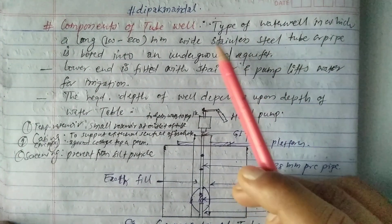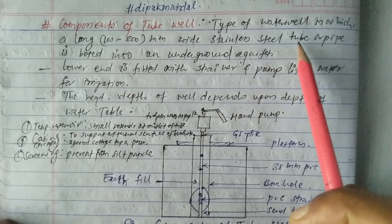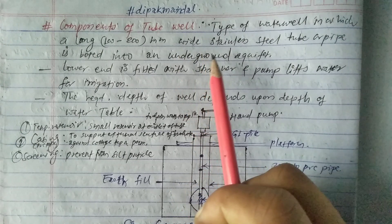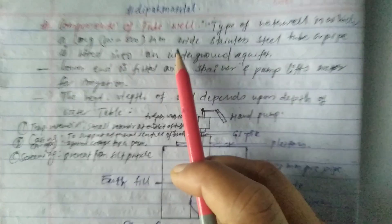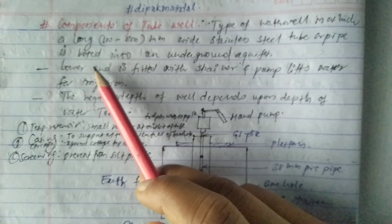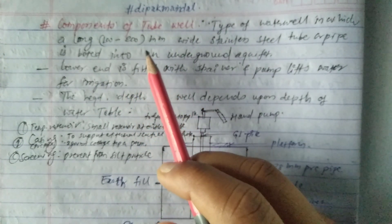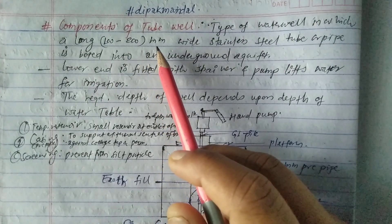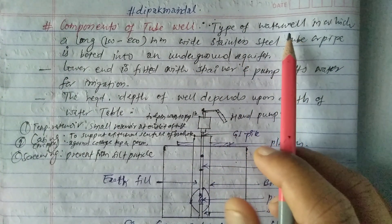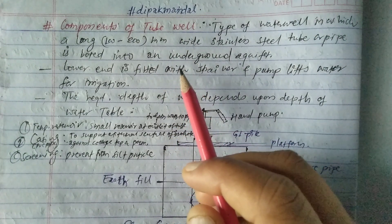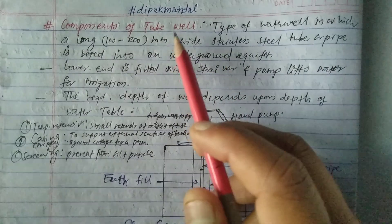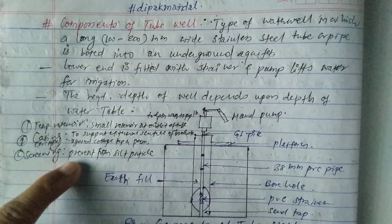A tubule is a type of water well in which a 100 to 200 mm wide stainless steel tube or pipe is brought into an underground aquifer. We already studied about the different types of aquifer and construction of aquifer in those previous videos. The stainless steel tube is driven into the underground aquifer during boring.